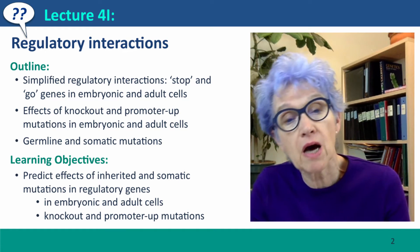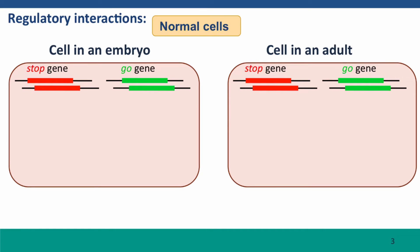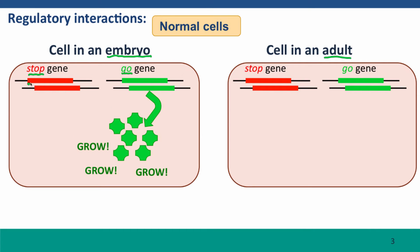We'll consider the effect of different kinds of mutations in both kinds of cells. So here are the genes we're thinking about, just called stop and go. We're considering these genes in normal cells, both in embryonic cells and in an adult cell. In an embryonic cell, the stop gene is off — it's not expressed — and the go gene is active.